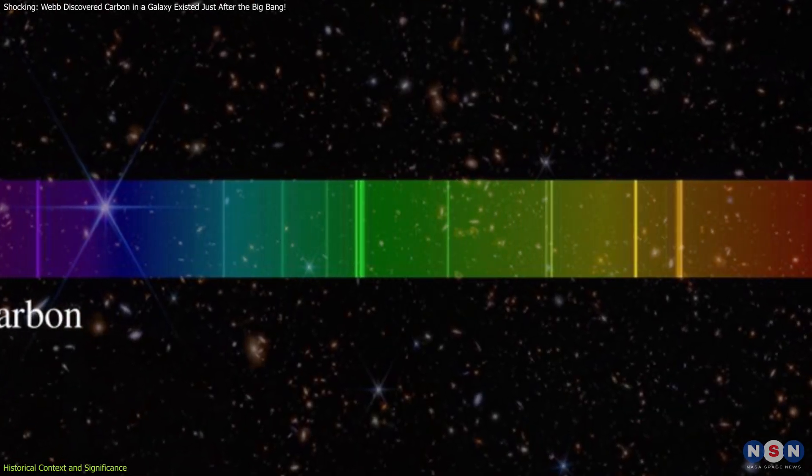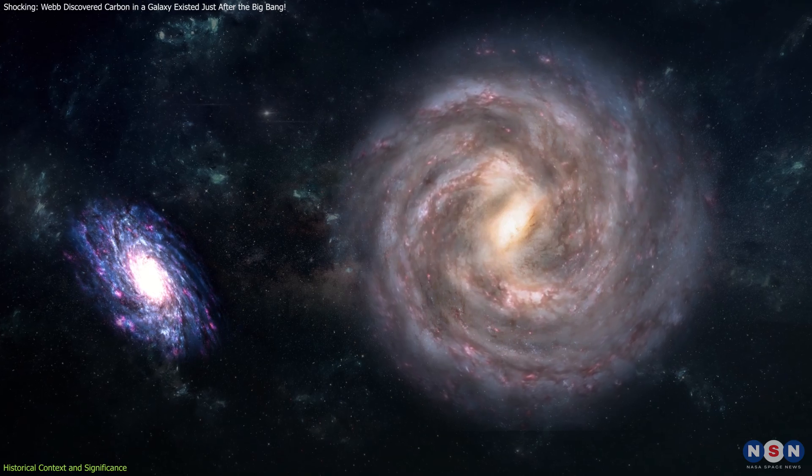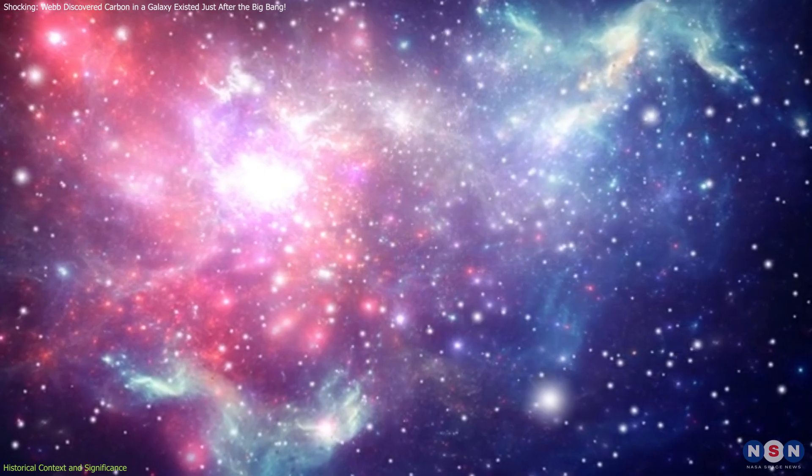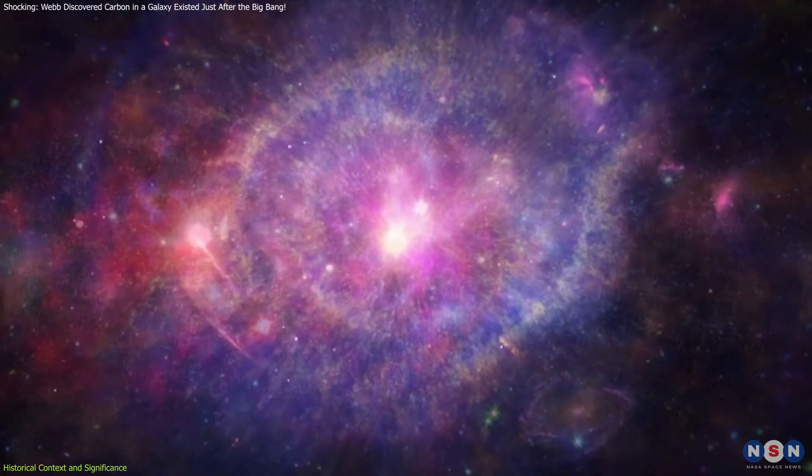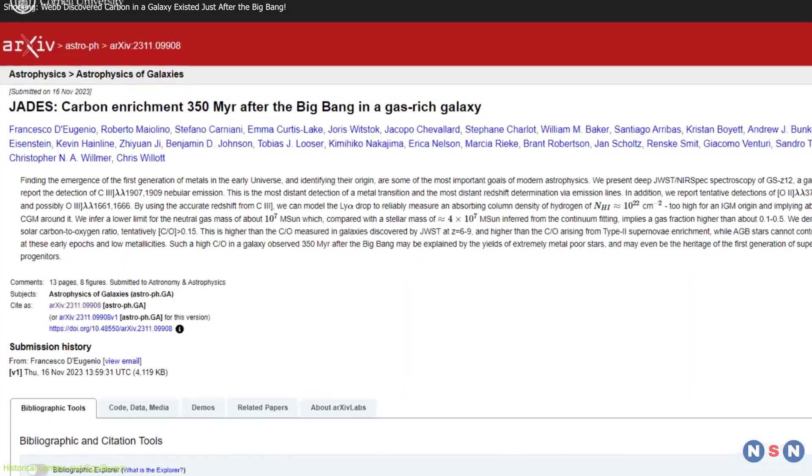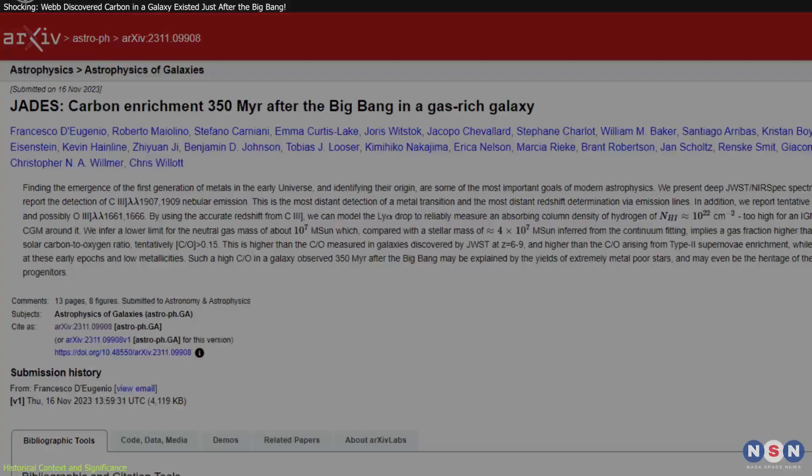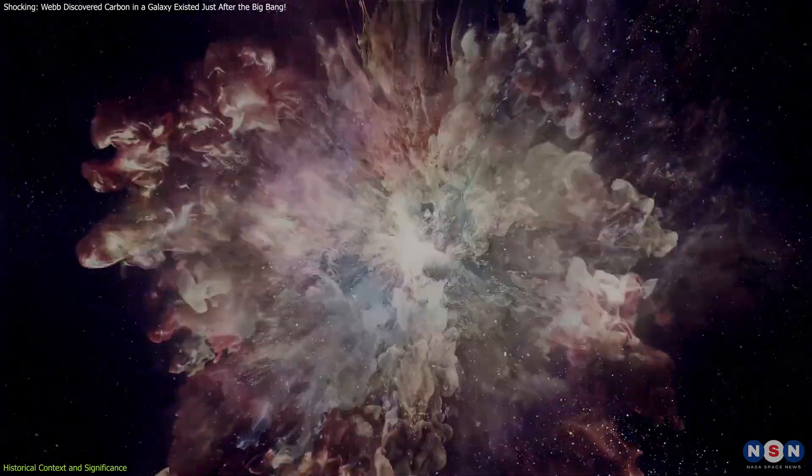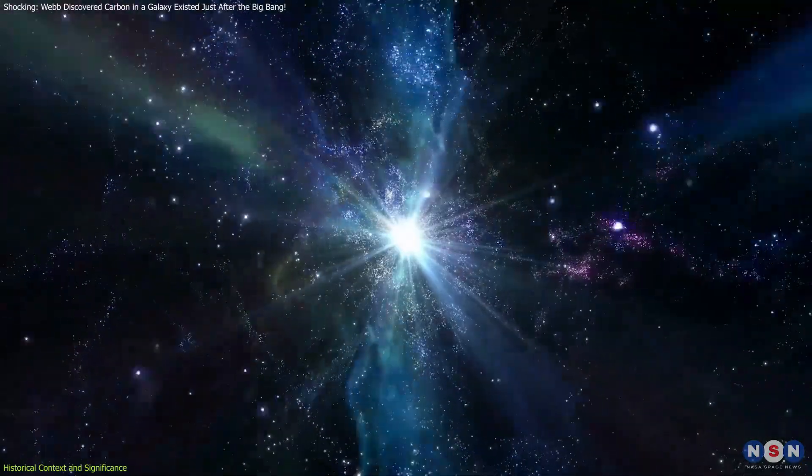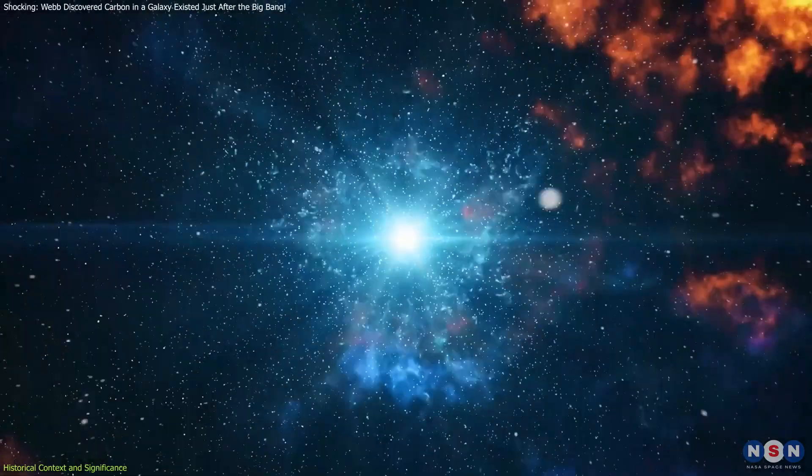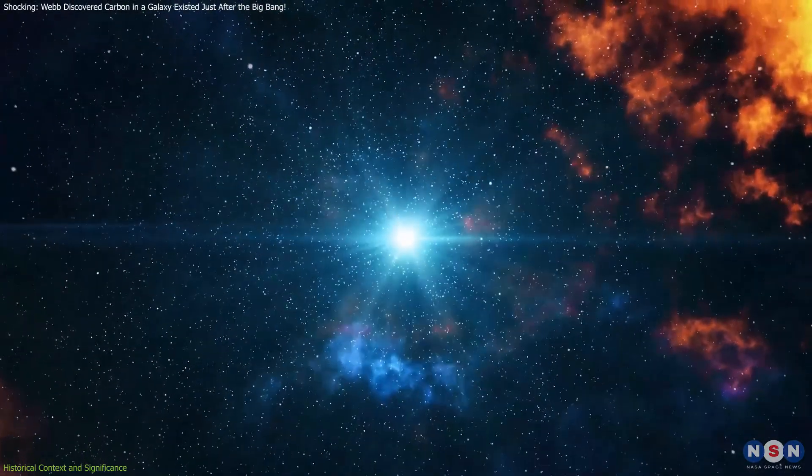The presence of carbon in the relatively young galaxy GSZ-12, which is 100,000 times less massive than the Milky Way, indicates that complex chemical evolution was occurring at an unexpectedly early stage. Traditionally, it was assumed that these early stars produced more oxygen than carbon. The discovery of carbon in the early universe indicates that the first stars were enriching the cosmos with life's building blocks much faster than previously thought, challenging existing models of stellar evolution. This revelation has significant implications for the conditions that could support the emergence of life, as it points to a more chemically diverse and dynamic early universe.